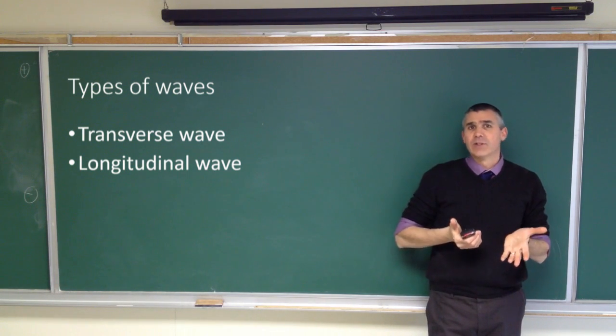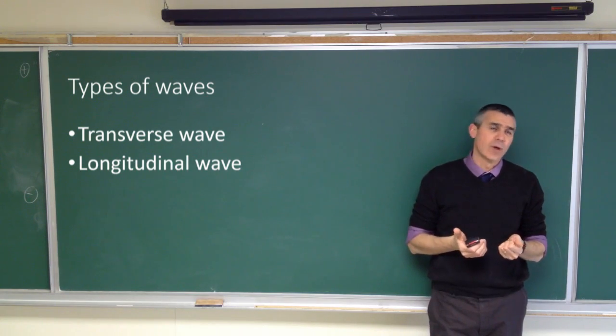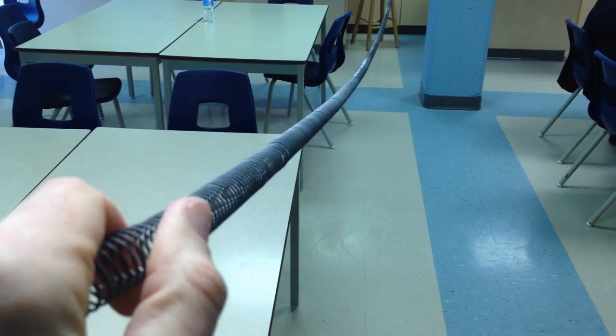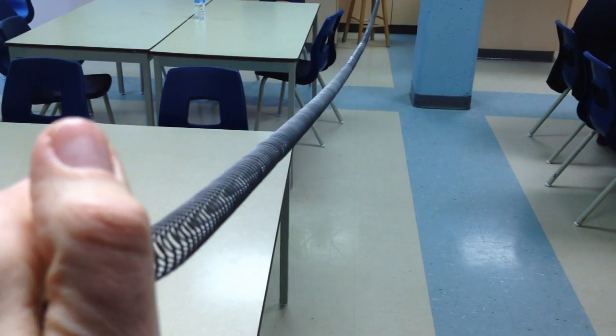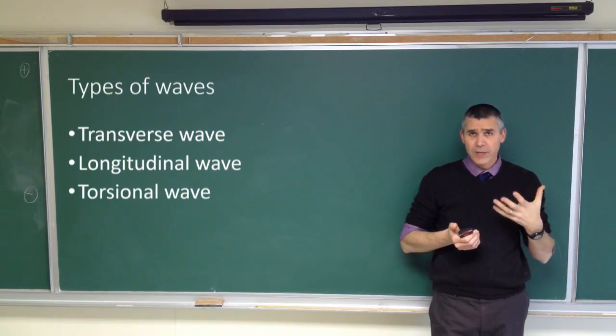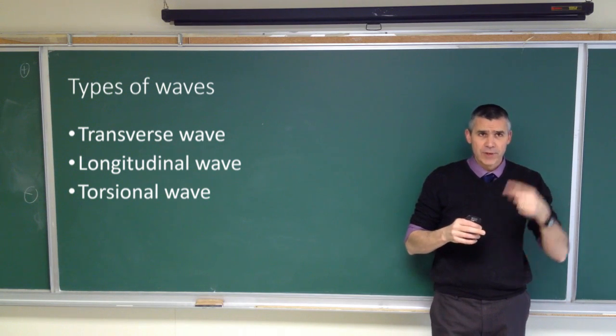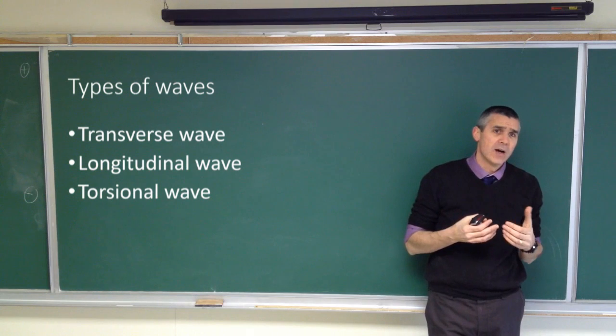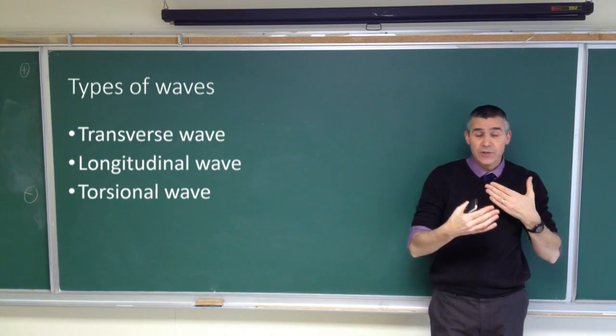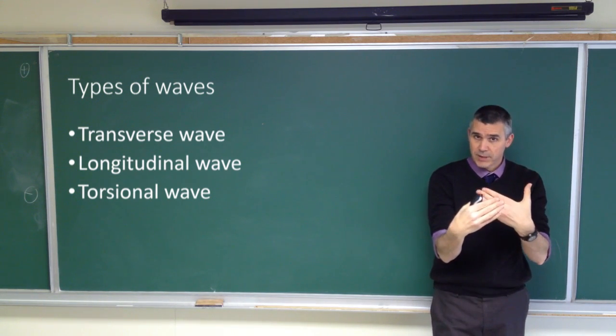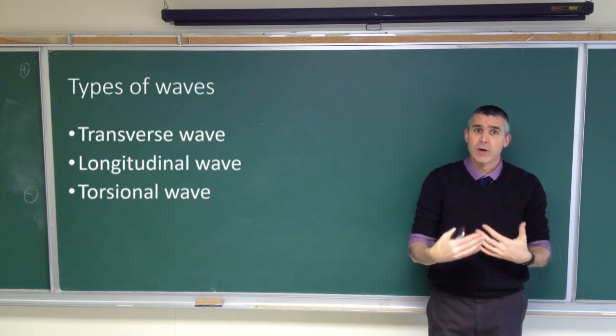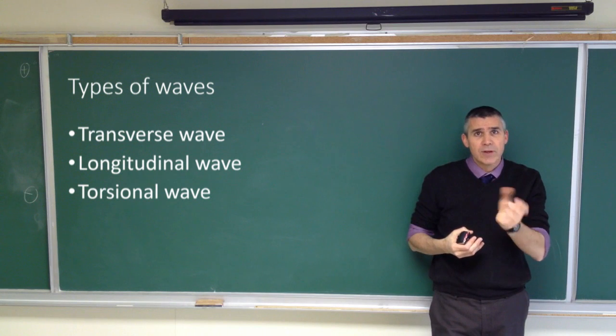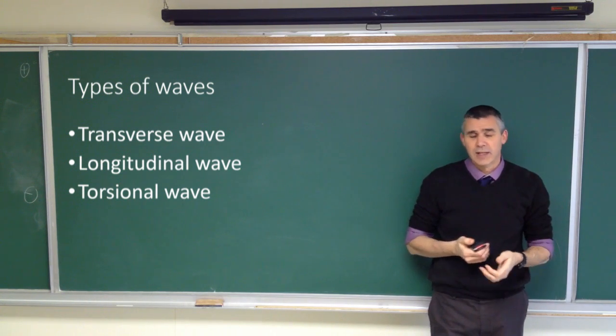Another type of wave we can have is called a torsion wave, or torsional wave, and that's when we twist the spring and let it go and have that zip down the length of the spring. So we can have transverse, where it's moving side to side but the wave is traveling this way, like a water wave. We can have a longitudinal wave, where the compression is along the same direction as the direction of motion - sound waves are of that type. And then we can have a torsion wave, where there is twist traveling down the length of the spring.